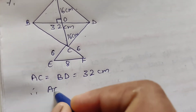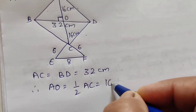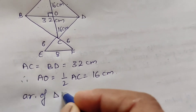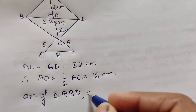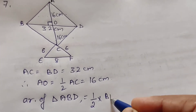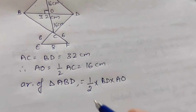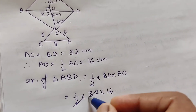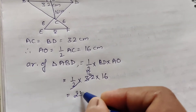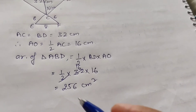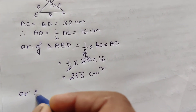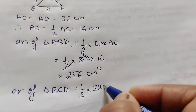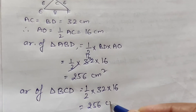Area of triangle ABD (part 1) equals 1 by 2 into base BD into height AO, which is 1 by 2 into 32 into 16, equals 256 centimeter square. Similarly, area of triangle BCD (part 2) is also 1 by 2 into 32 into 16, equals 256 centimeter square.